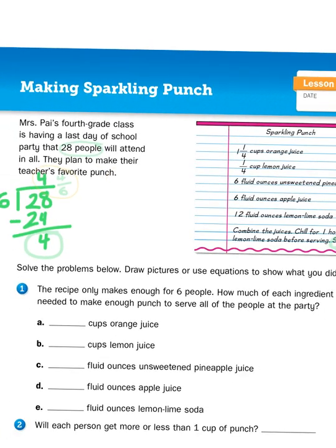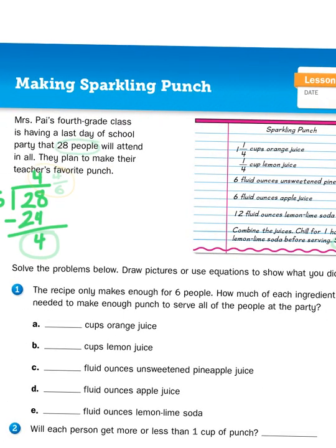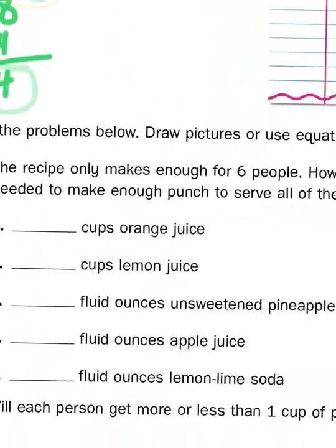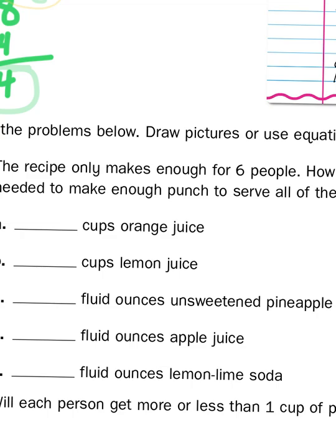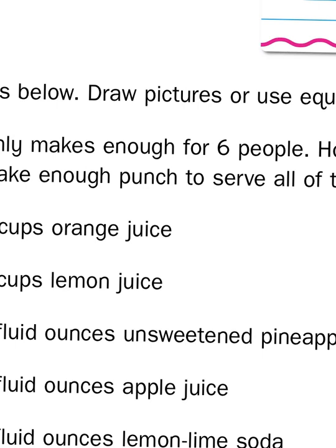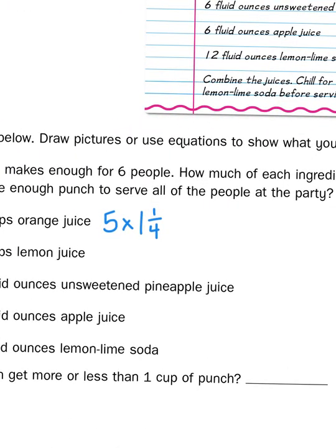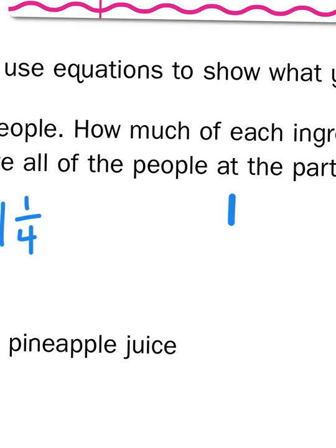So let's take a look at the first ingredient, which is orange juice. And the recipe calls for 1 and 1 fourths cup of orange juice. So, in order for us to figure out how much orange juice we need to make enough punch for 28 people, at least, we need to take the number 5, and we're going to multiply it by 1 and 1 fourth. We've multiplied mixed numbers before, but basically what we want to do is isolate each place value. 1 and 1 fourths times 5.